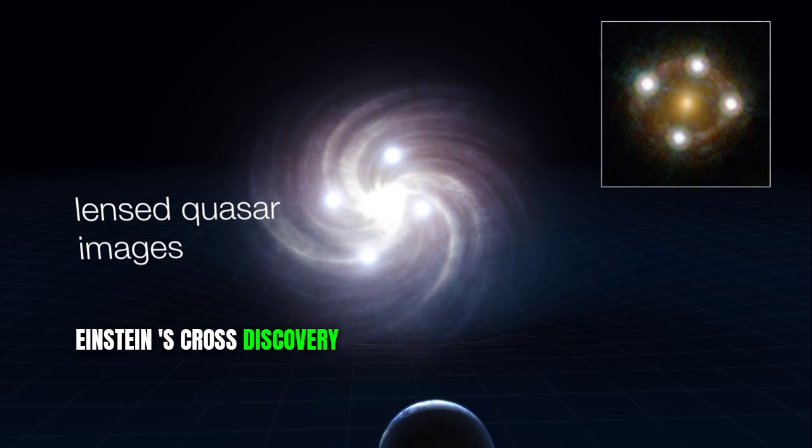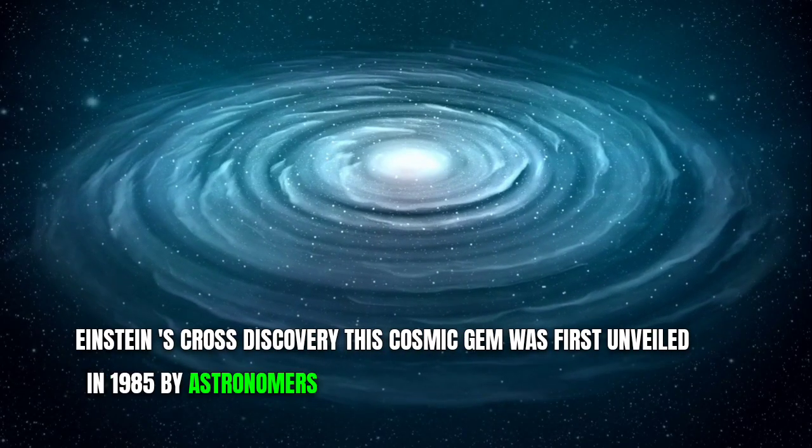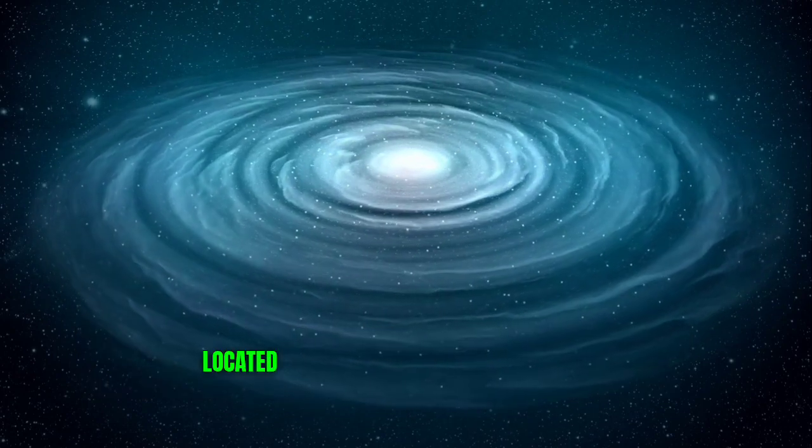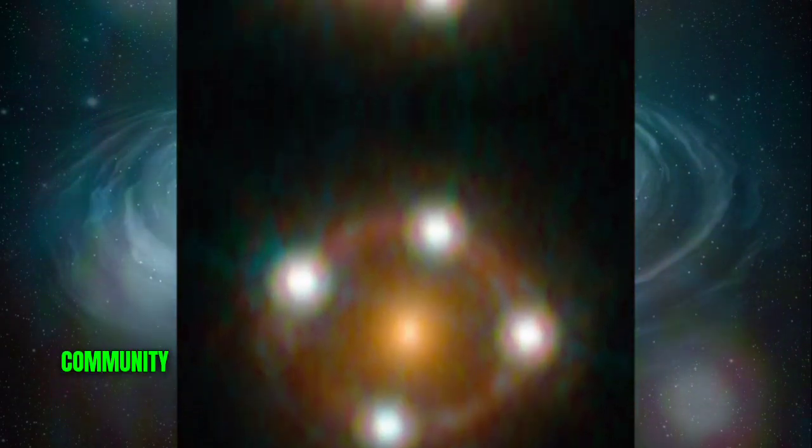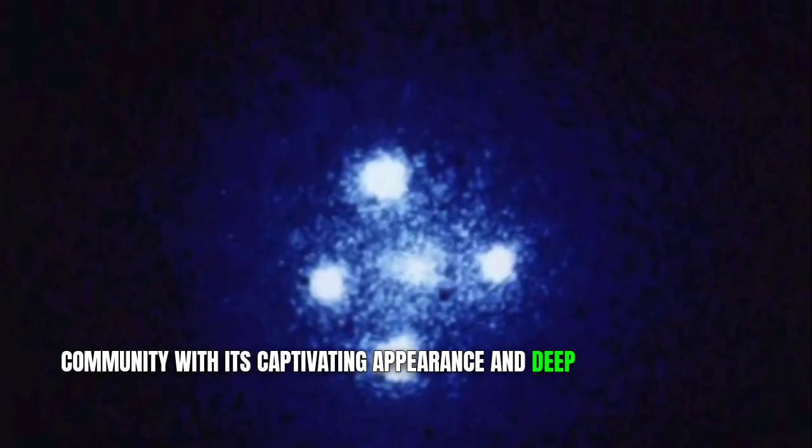Einstein's cross discovery. This cosmic gem was first unveiled in 1985 by astronomers using the Multiple Mirror Telescope. Located in the Pegasus constellation, Einstein's cross stunned the scientific community with its captivating appearance and deep implications.